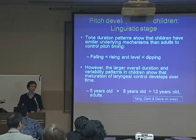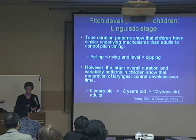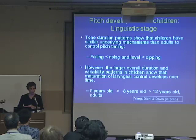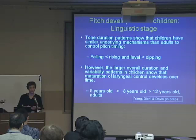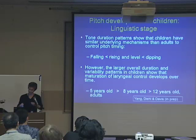How does pitch work in children? Young, Bill, and Davis studied five-year-old, eight-year-old, and twelve-year-old monolingual speakers of Chinese. They showed them pictures and the children had to say the words. They found that syllables in falling tones were shorter, and syllables in rising and level tones were longer, and in dipping tones even longer. But the overall duration and variability patterns in children were much larger than in adults, indicating a common underlying mechanism that children still have to learn to control — showing that maturation of laryngeal control develops over time.